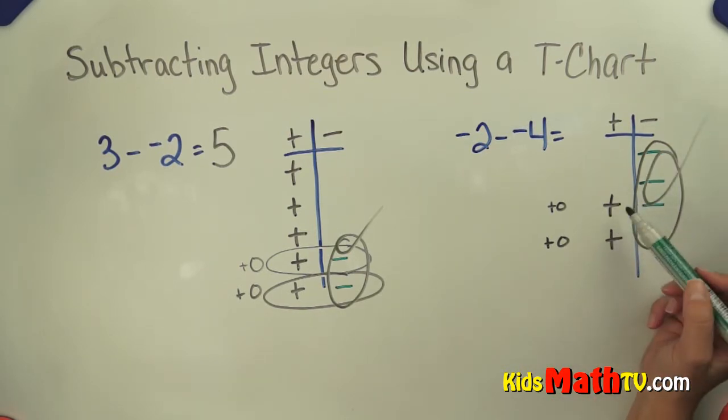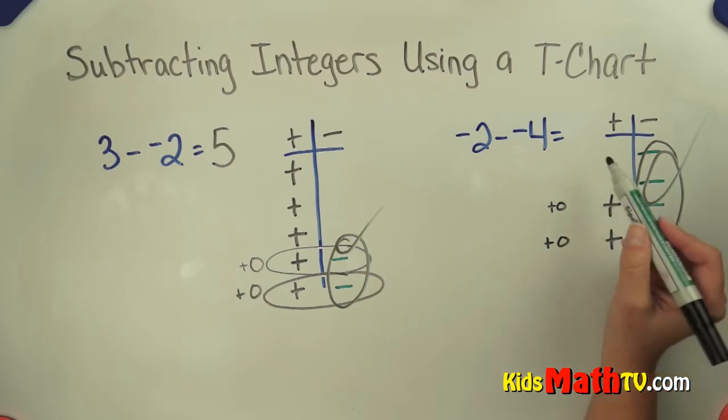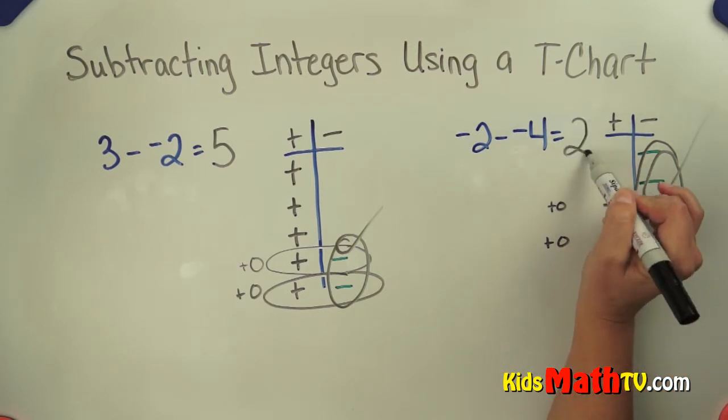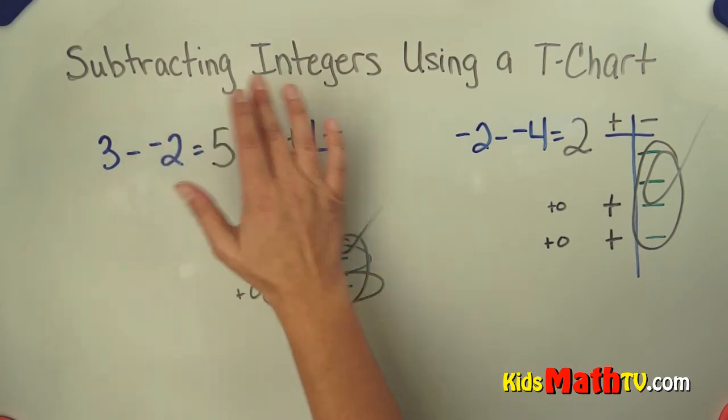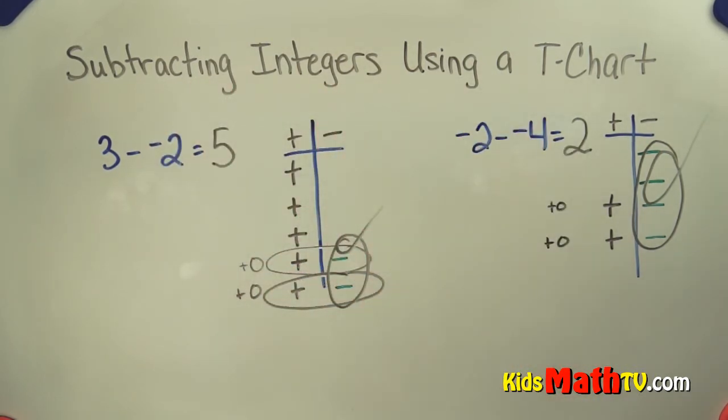And whatever is left is my answer. So I see 2 positives here. So my answer is positive 2. And that's the end of our lesson on subtracting integers using a T-chart.